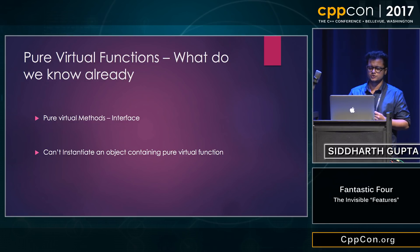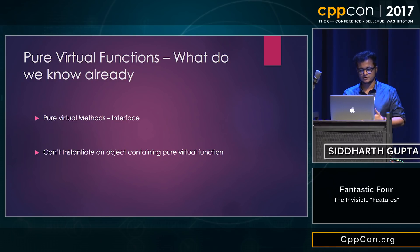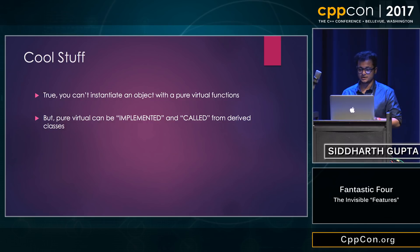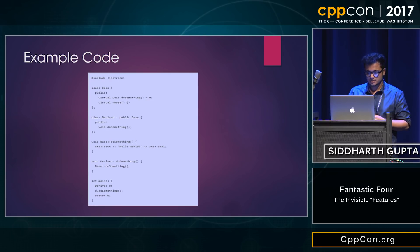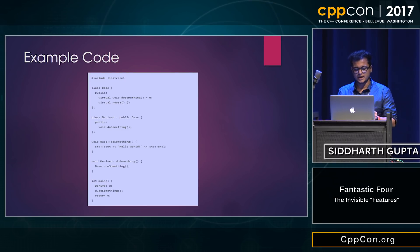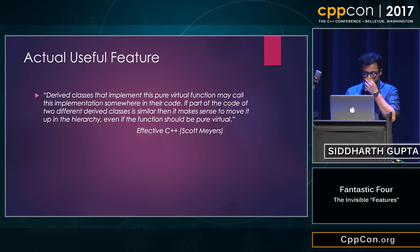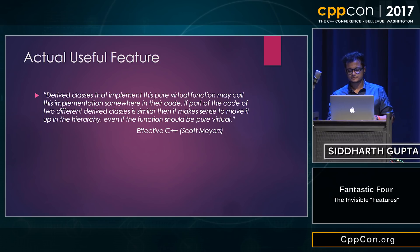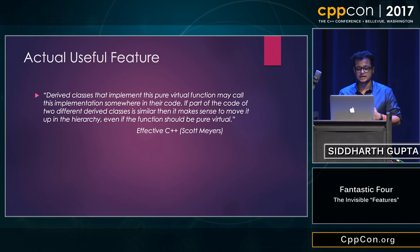The last thing I want to talk about is pure virtual functions. As far as I knew, pure virtual functions didn't have a function body — and it's true they don't have to, but you can actually provide a body for a pure virtual function. These pure virtual functions can be implemented and called from derived classes. As an example, I have a base class with a 'do something' pure virtual function, derived by a class called Derived, and I am actually calling the pure virtual function from the derived class. Scott Meyers notes this is actually the most useful of all four features I spoke about. If derived classes implementing the pure virtual function share similar code, it makes sense to move that shared implementation up in the hierarchy, even if the function should remain pure virtual.